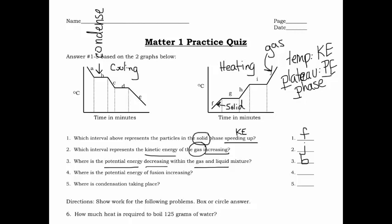Number four: where is the potential energy at the plateau of fusion? Fusion relates to the heat of fusion — the lower plateau, which is the freezing point. Since the question says 'increasing,' we're going to look at the heating curve and look at one of the plateaus. The heat of fusion is this lower plateau, letter G.